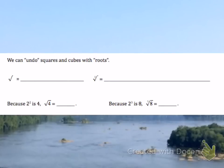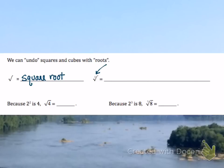Just like we can square values and cube values, we can unsquare and uncube by using roots. When you see just the checkmark symbol, that is the square root symbol. That is like undoing the square — you ask yourself what value times itself gives you the number inside. The cube root looks the same except it has a 3, telling you you're looking for what number as a factor 3 times equals the value inside. Sometimes we call that root 3.